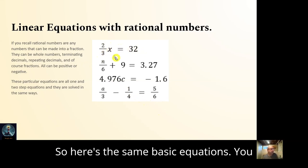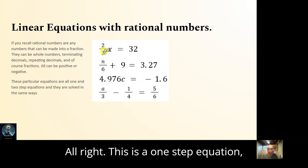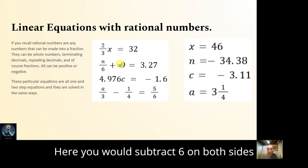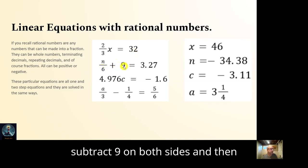So here's the same basic equations. You do the same thing. This is a one-step equation. Two-thirds x equals 32. So to solve it, you do two-thirds x divided by two-thirds and 32 divided by two-thirds, which would be 96 over 2, which is 46. Here you would subtract 6 on both sides, subtract 9 on both sides, and then multiply by 6. Here you just divide by 4.97. Here you would add one-fourth and then multiply by 3.